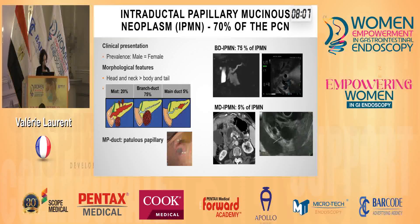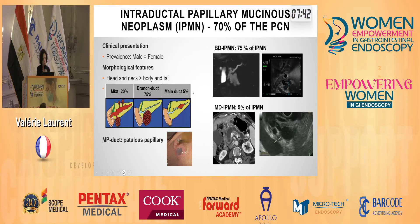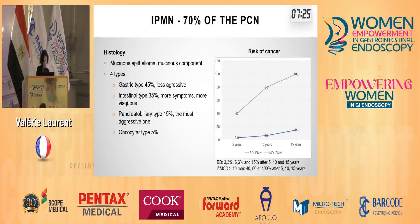The intraductal papillary mucinous neoplasm represents 70% of pancreatic cysts. They affect male and female equally and are mainly located on the head or the neck of the pancreas. The main type is the branch duct IPMN, as you can see on this MRI or EUS picture. Sometimes the main pancreatic duct is involved, as either a segmental or global dilation of the duct. In histology, this is a mucinous lesion with a risk of malignancy around 40% if the main pancreatic duct is involved after five years of progression, and 100% of malignancy after 15 years of progression.